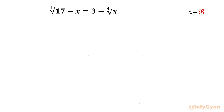Welcome to InfiGyaan friends. Today in this video we are going to take up one very interesting and challenging radical equation. It is 4th root of 17 minus x equal to 3 minus 4th root of x. We have to find out real solutions only. I will demonstrate two different methods to solve this problem.